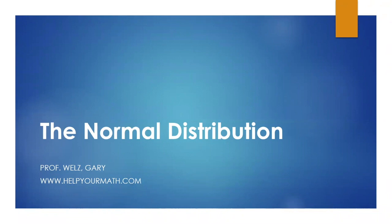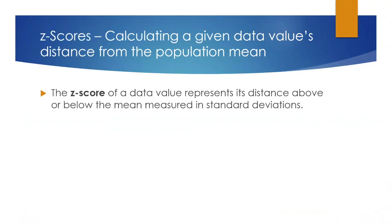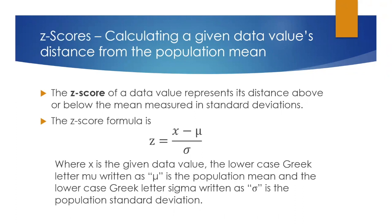Today we're going to talk about the normal distribution. Before we begin, we have to introduce the concept of a z-score. A z-score is used to calculate a data value's distance from the population mean. The z-score of a data value represents its distance above or below the mean measured in standard deviations. The formula for the z-score is z equals x minus mu divided by sigma, where x is the given data value, the lowercase Greek letter mu is the population mean, and the lowercase Greek letter sigma is the population standard deviation.